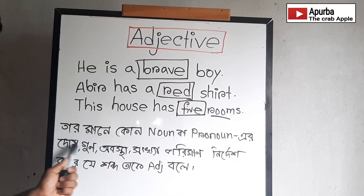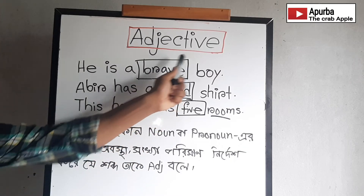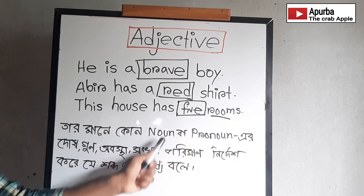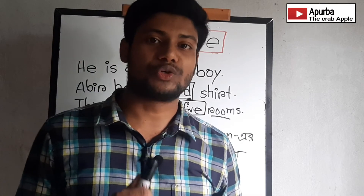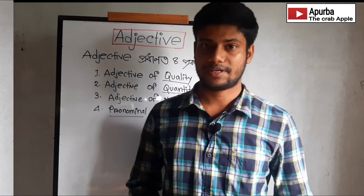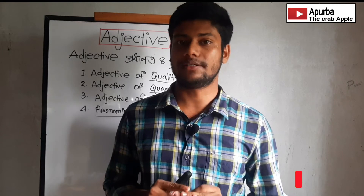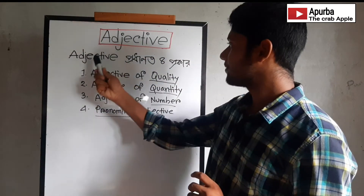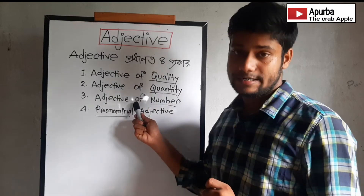So, regarding adjective — an adjective describes the quality, state, or number of a noun or pronoun. Adjective of number, and pronominal adjective — let's look at those.